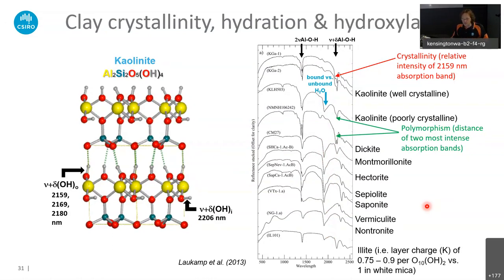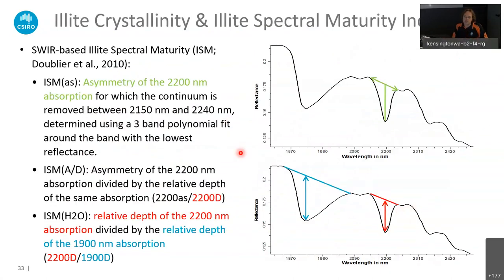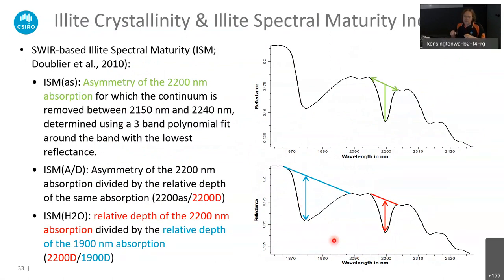The relative intensity of bound versus unbound water changes with different minerals — and these are just single examples of standard minerals. Usually, clay types can be very well extracted from XRD, but we can also use reflectance spectroscopy to identify different clay types in quite some detail. I want to highlight, on slide 33, the different indices that Michael Dubiel published in 2010, called the illite spectral maturity indices. You can use different absorption features related to hydroxyl groups and the Al-OH, as well as the shape of water absorption features and their relative intensity, to derive different illite spectral maturity indices.